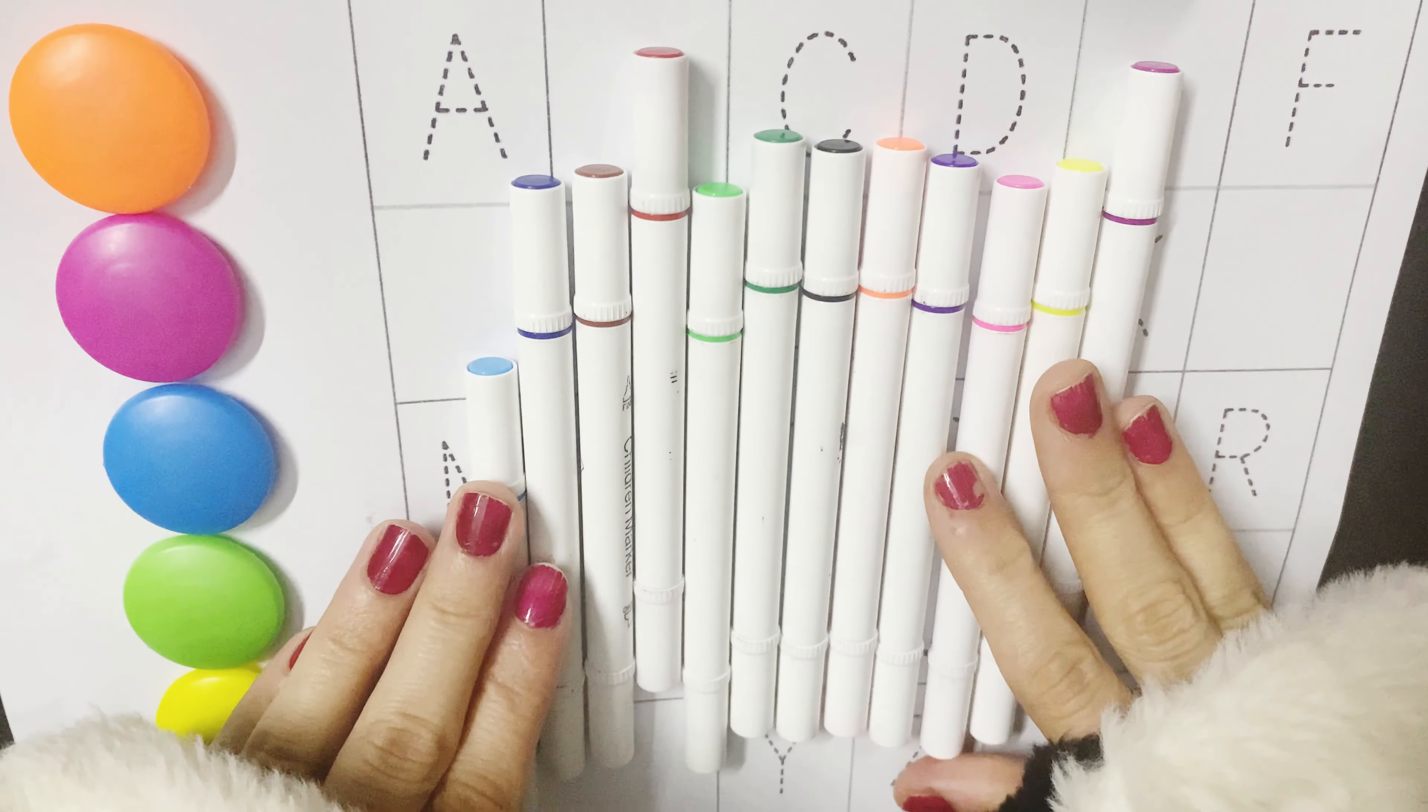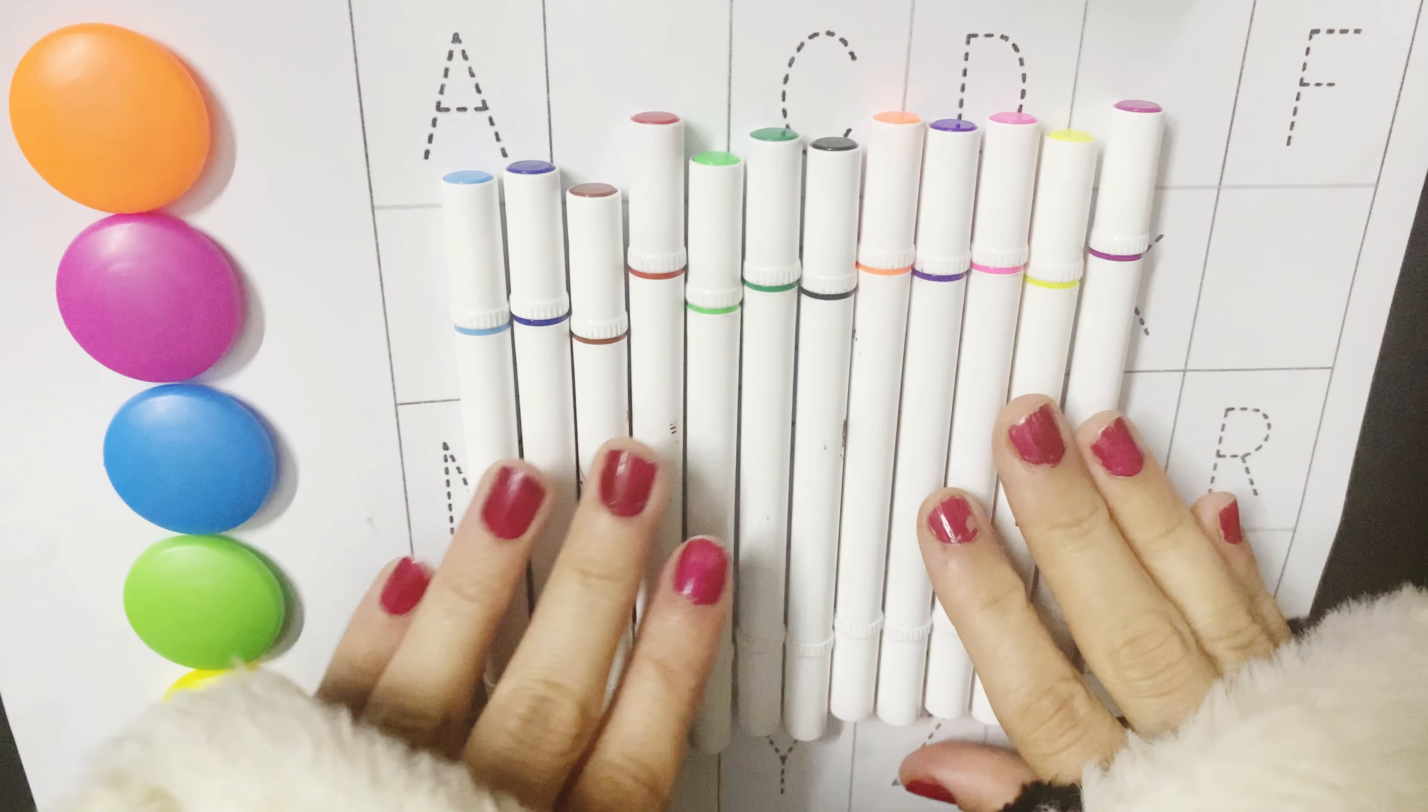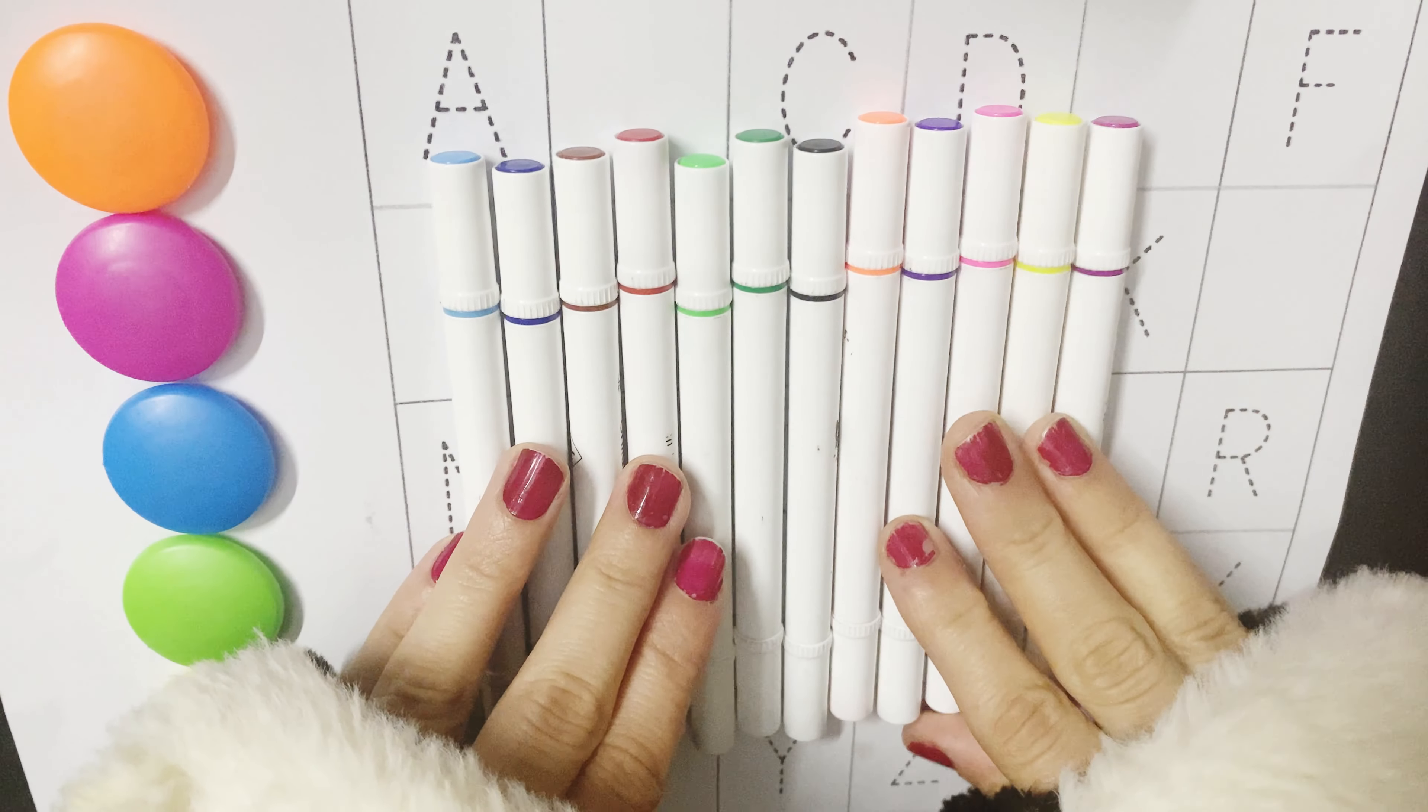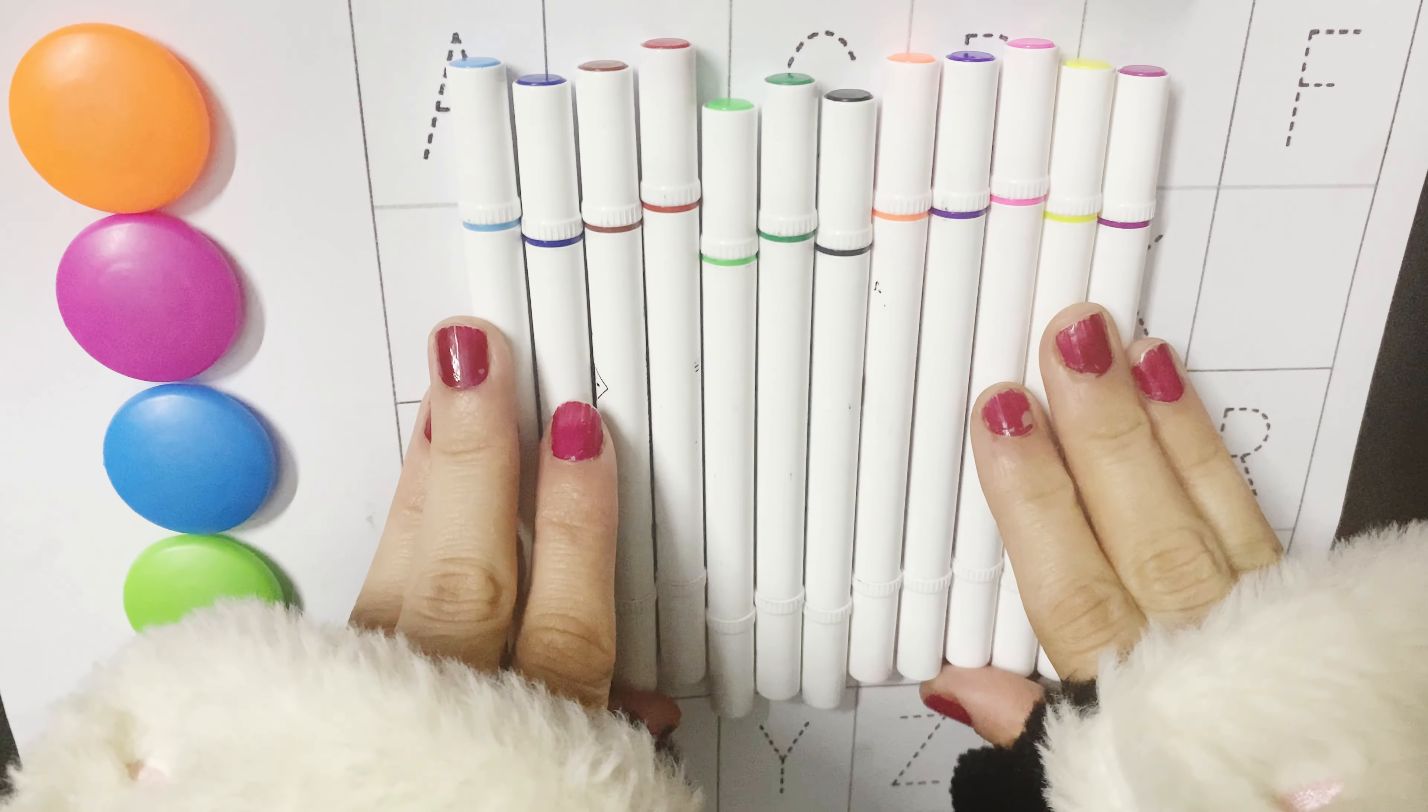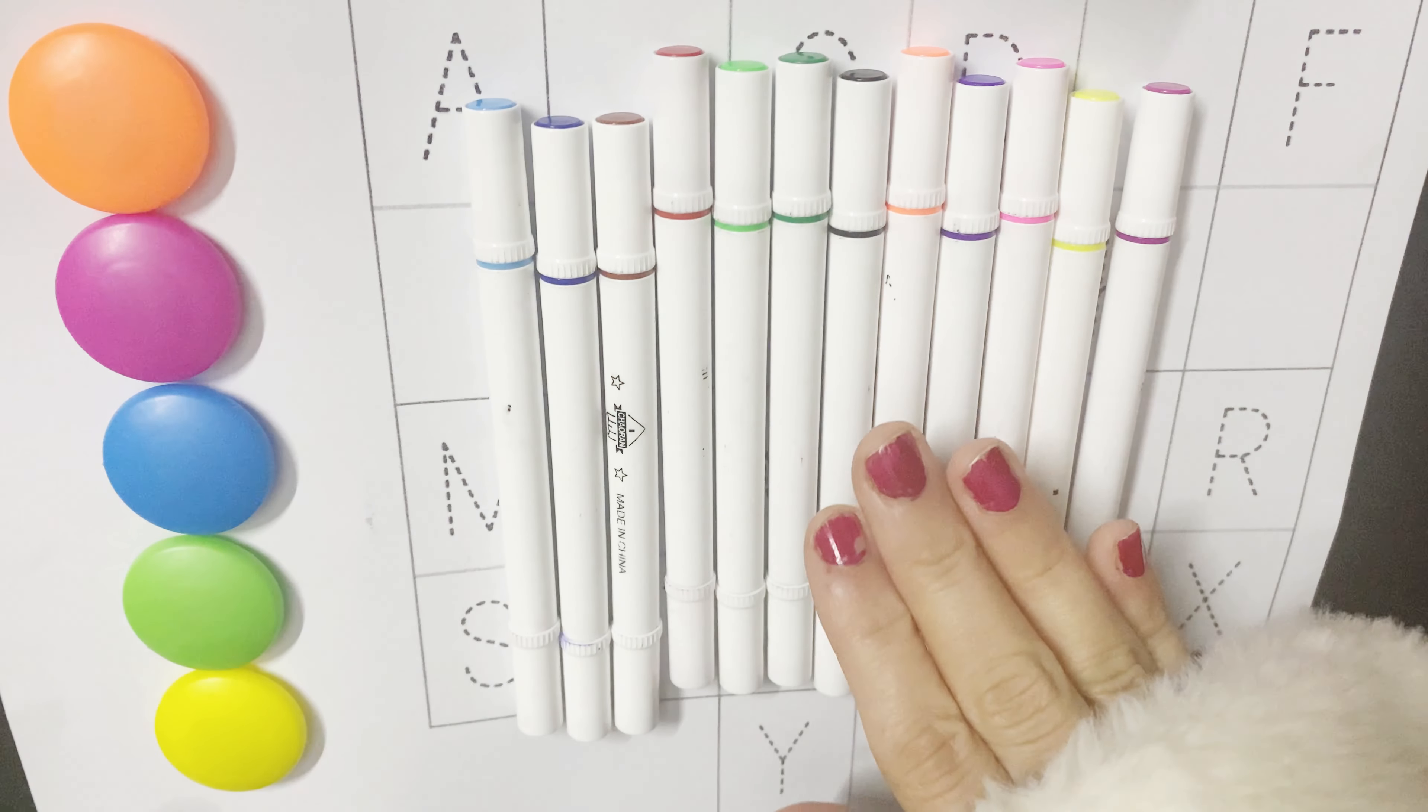Humpty Dumpty sat on a wall. Humpty Dumpty had a great fall. All the king's horses and all the king's men couldn't put Humpty together again. Wow!